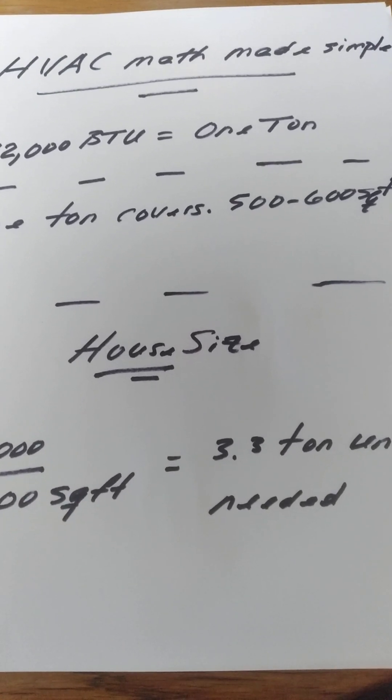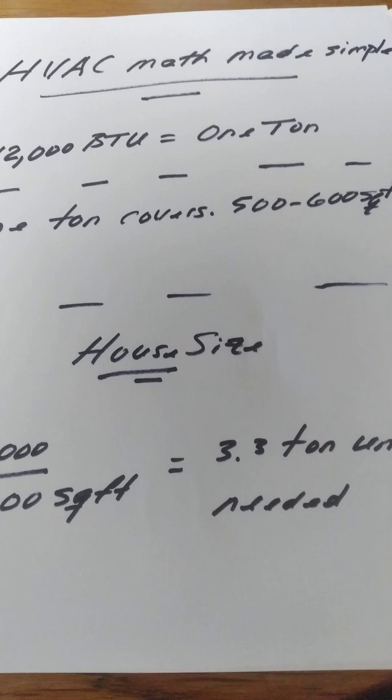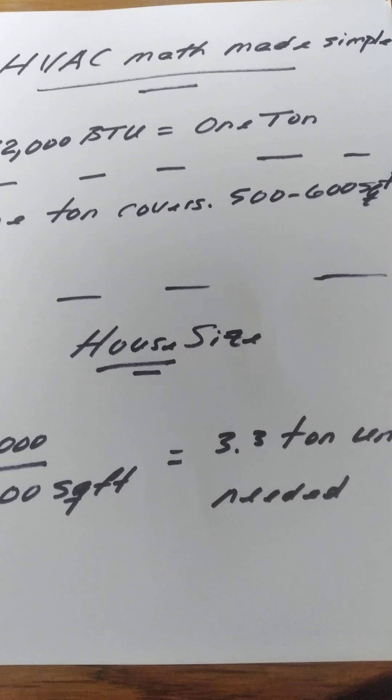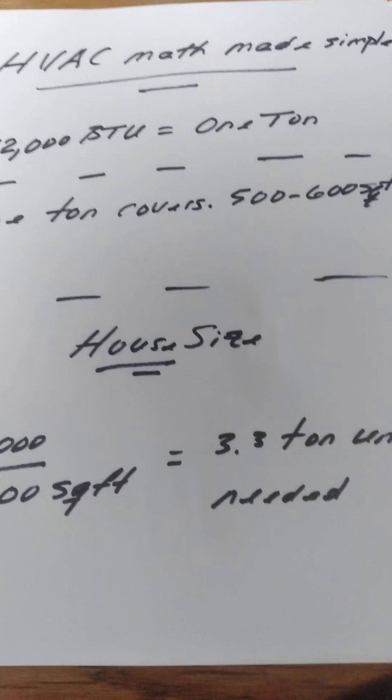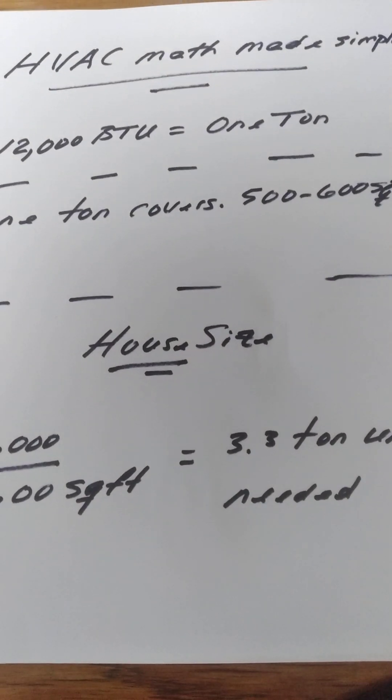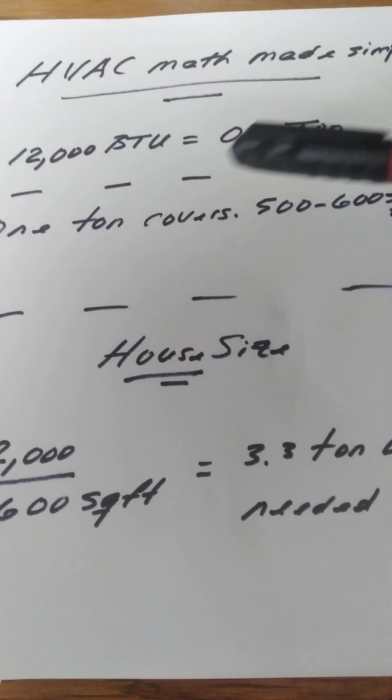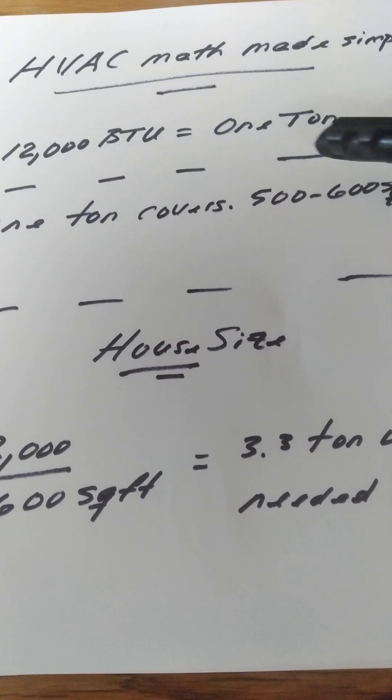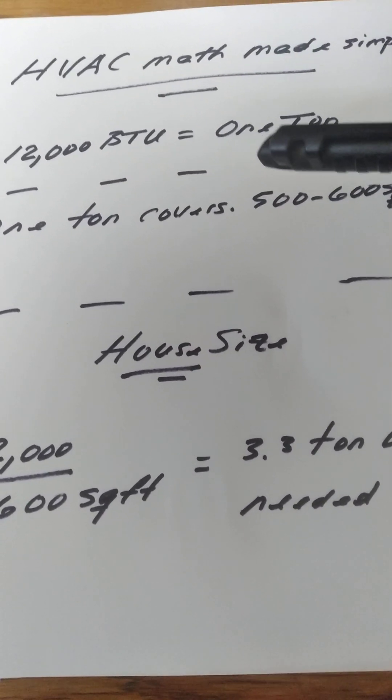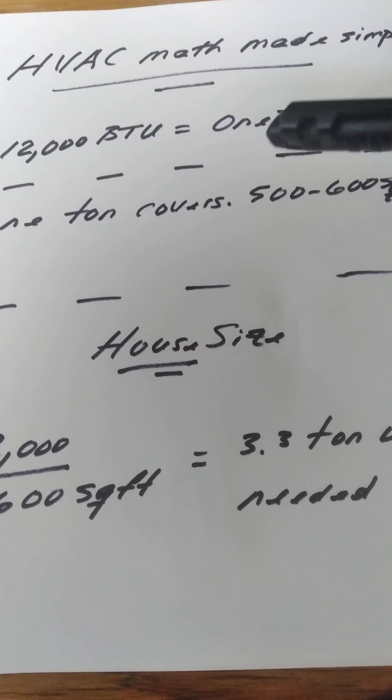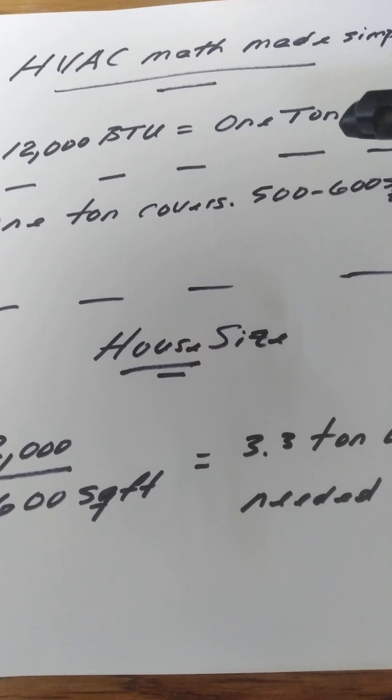It will get you in the ballpark. It is a rule of thumb, not an exact science. So that being said, first, 12,000 BTUs is equivalent to one ton. Again, 12,000 BTUs—that's British thermal unit—is equivalent to one ton.